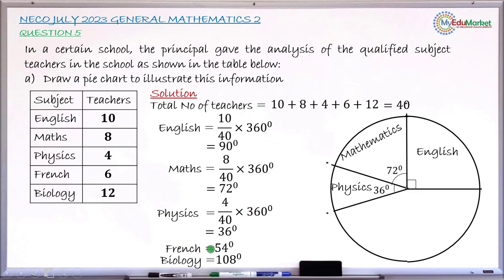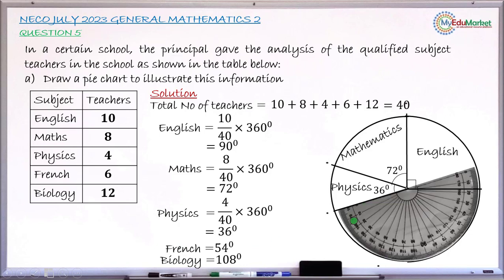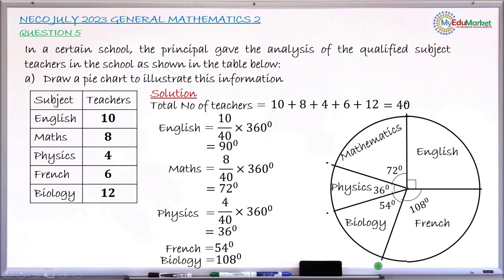So next is the French, 54. Put the protractor back and take angle 54. We are reading from the line that starts with zero place, from the scale starting with zero. This is 50, so count four small divisions there. That gives you 54. You make a small dot there. You remove the protractor and draw a line.